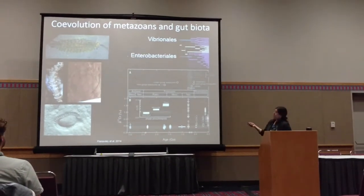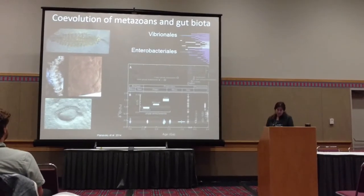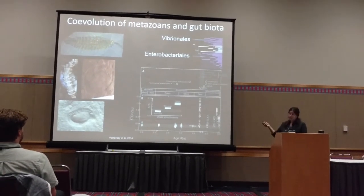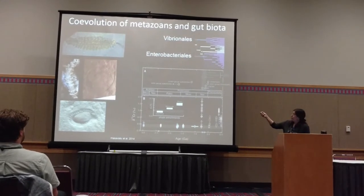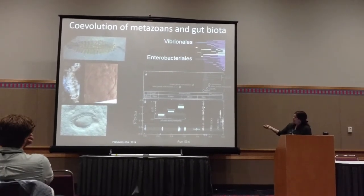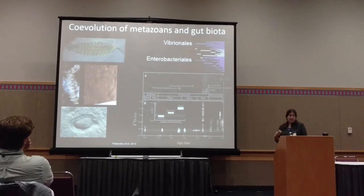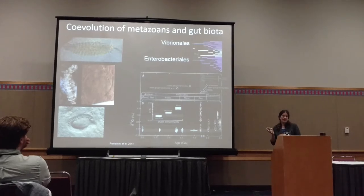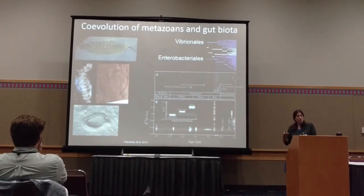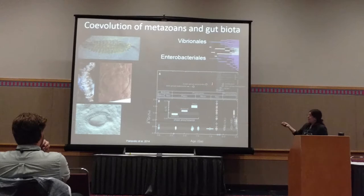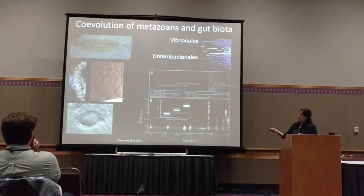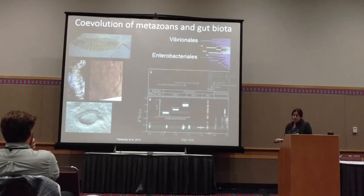Coming back to Vibrionales and Enterobacteriales — I was still really excited, and this is the hot point of the project. What we do see is that the confidence interval of the divergence estimate for these clades, from the inclusive tree, is actually right in the sweet spot at the end of the Neoproterozoic, at the same time when the phylogeny of Bilateria — and maybe cnidarians — began to evolve.